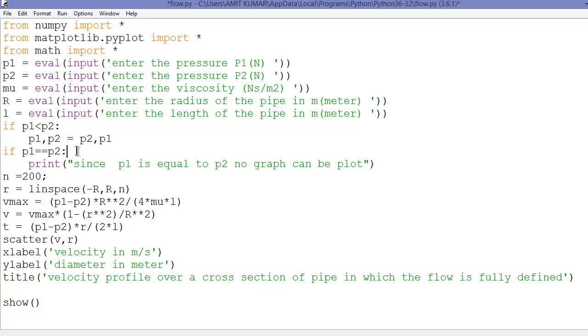If p1 equal to p2 what will happen. We get a 0 value. As you can see. Vmax p1 minus p2. If p1 equal to p2 we will get 0. So it's obvious that we will get no graph.